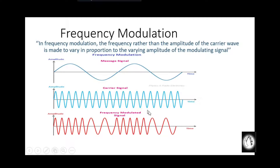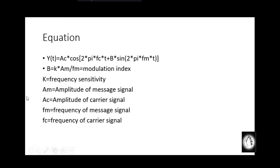We will plot the frequency modulated signal and see the equation. The equation is: y (output) = Ac · cos(2π·fc·t + β·sin(2π·fm·t)), where β is the modulation index defined as k · Am / fm. Here, k is the frequency sensitivity, Am is the message signal amplitude, Ac is the carrier signal amplitude, and fm is the message signal frequency.